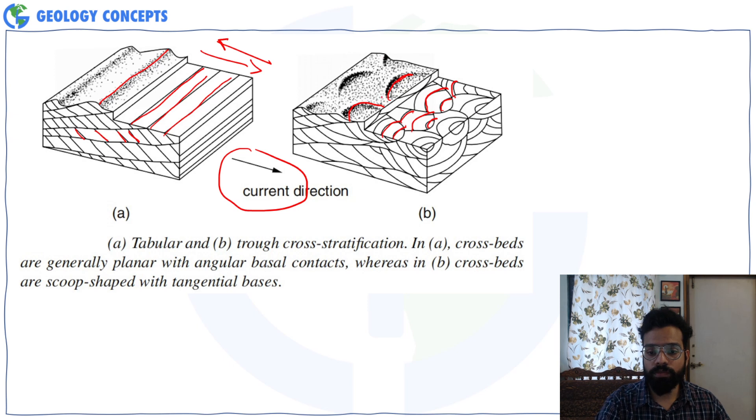So if you have, if this is the current direction and if you have two directions over here, let's say this is the upstream and this one is downstream. The trace of the four sets will always be concave towards the downstream. So you will be able to make out the current direction.